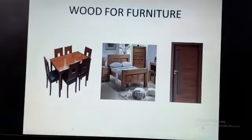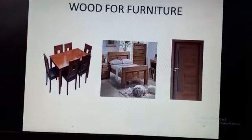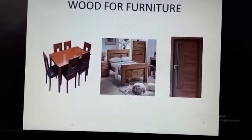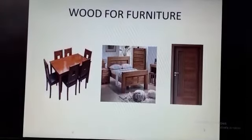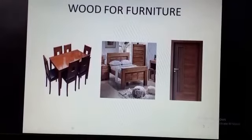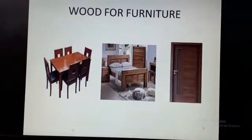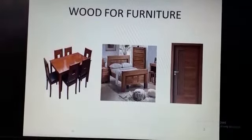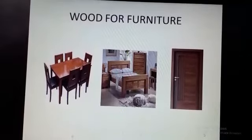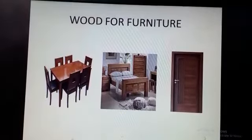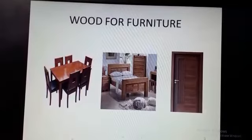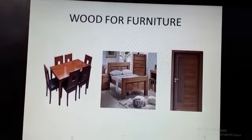The next category is wood. Wood is obtained from the trunk and branches of big trees. Wood is used for making furniture, houses and pencils. You use a pencil to write, and pencil is also made of wood.